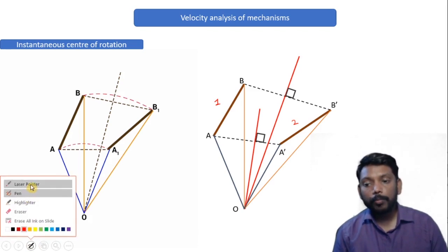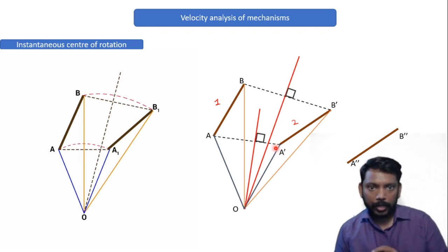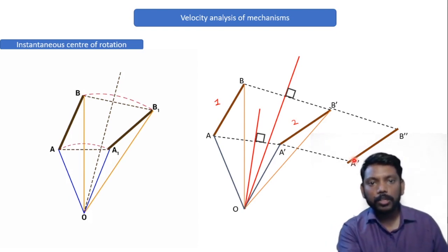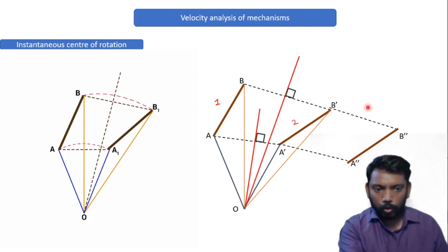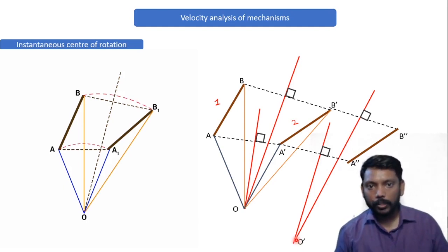Now what if it is moving to a new position, let's say position number 3? To link AB jo hai wo naye position par move karne wala hai, that is position A-double-dash, B-double-dash. Position 2 se position 3 par move kiya hai, to again it would have rotated about a particular center. To wo center locate karne ke liye bhi same process istemal karenge. So what we'll do is, we'll simply join initial position with the new position. Aur jo naya line bana hai, unko wapas perpendicular karenge. Now we can observe these perpendicular are again intersecting at a point.